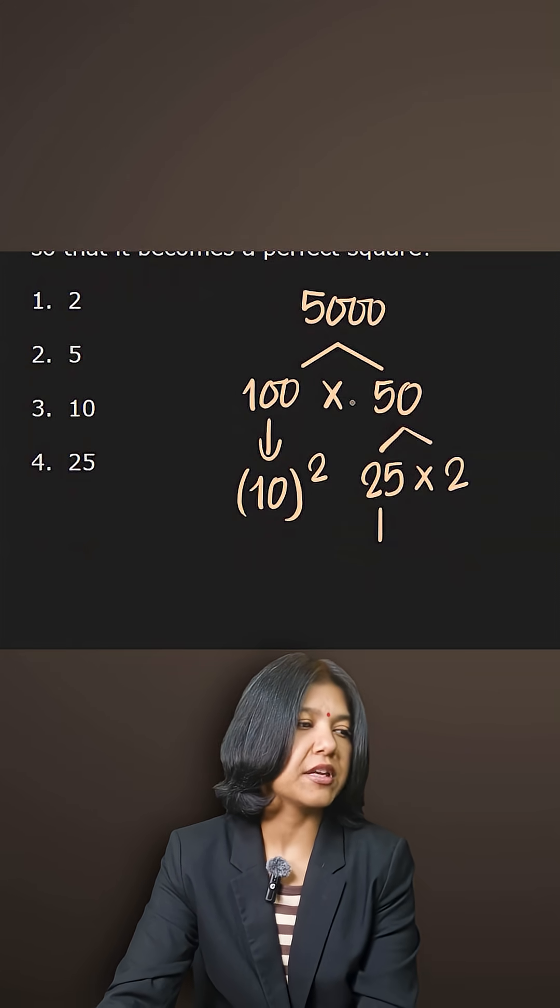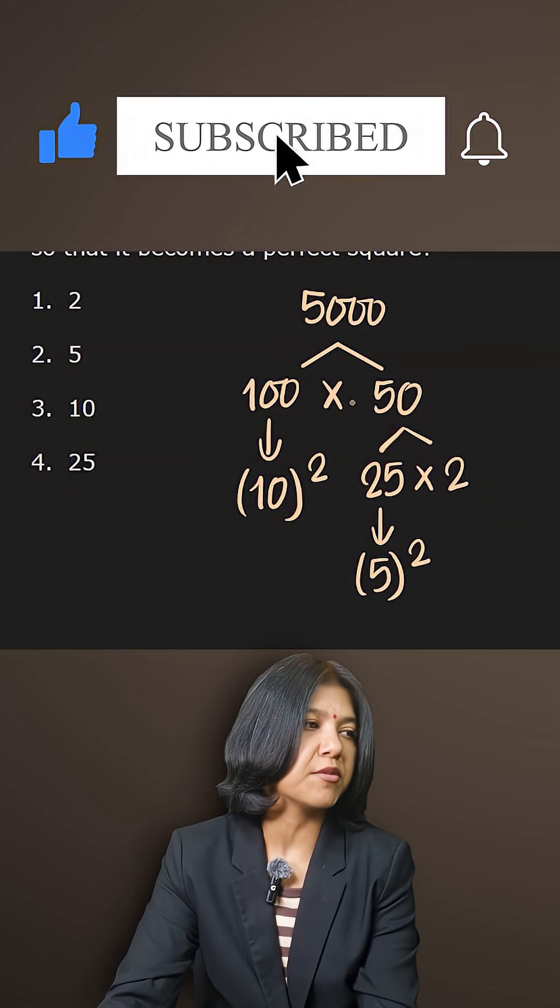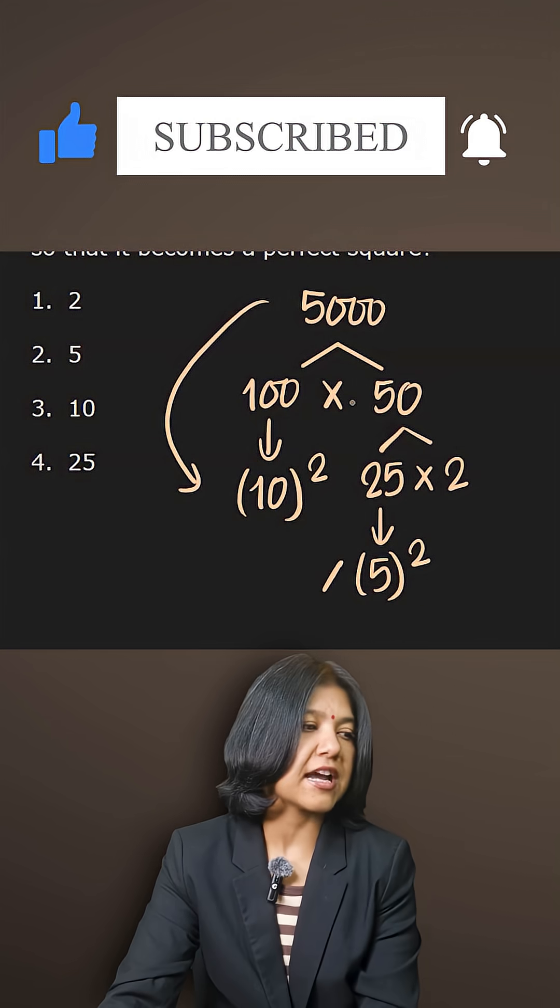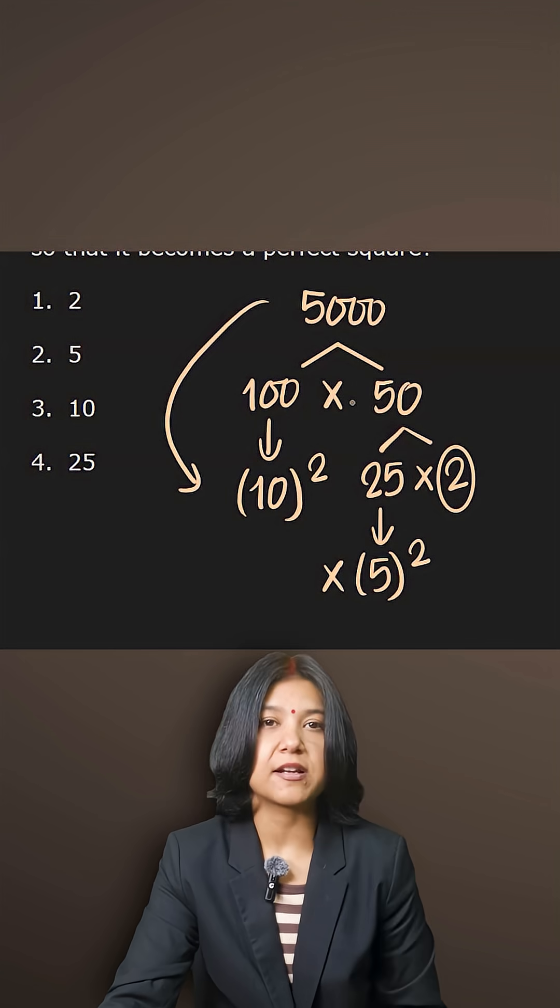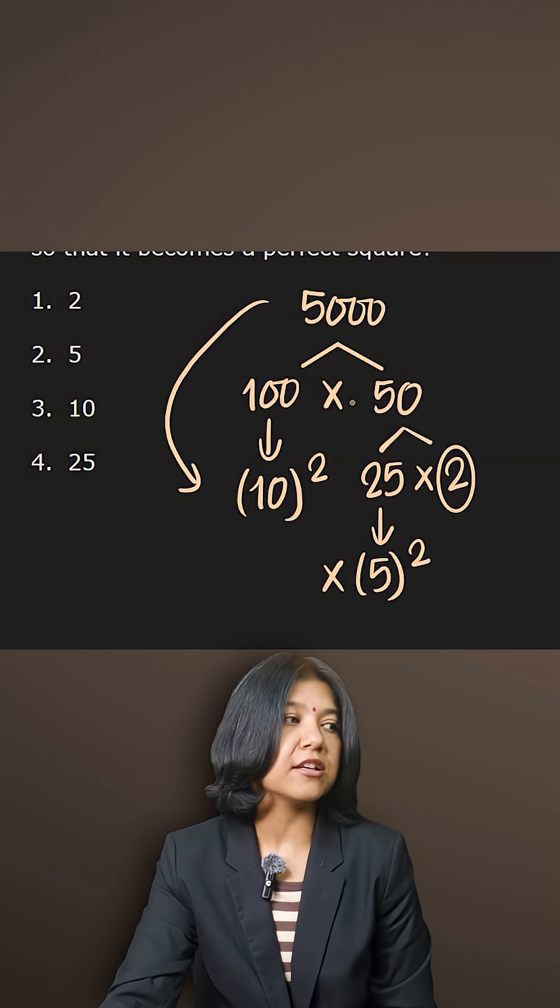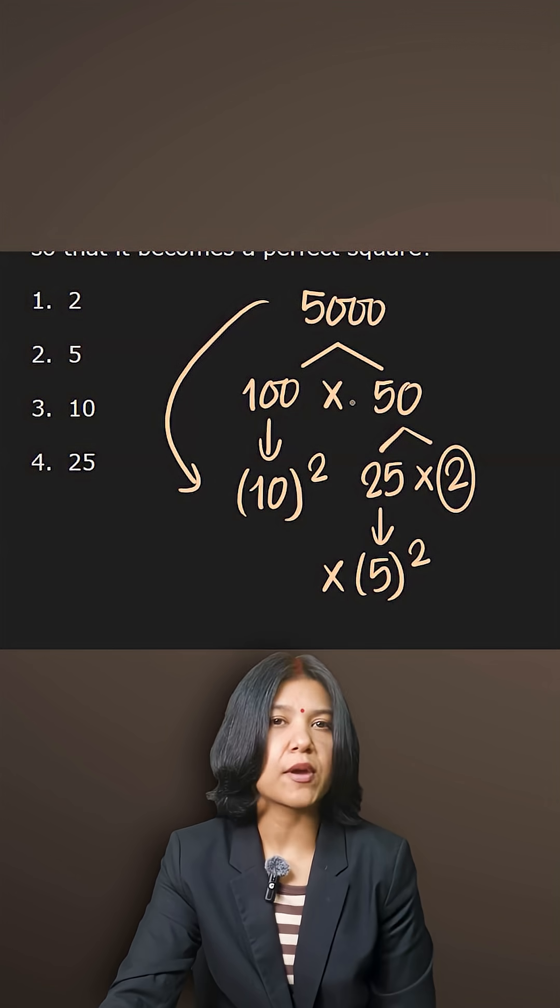I can say that 5000 here can be represented as 10 squared times 5 squared, and this 2 here is additional, a multiplier. So if I divide by 2, if I remove this number 2, then what I'll have is just a square number because I can represent it in the factors or squares of 10 and 5.